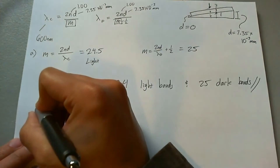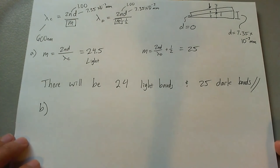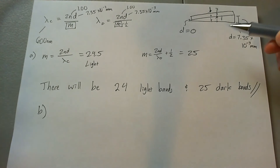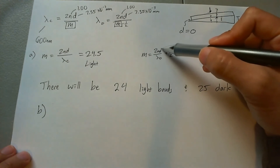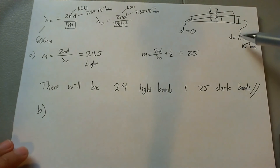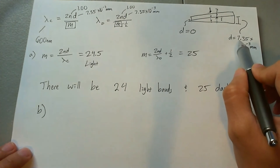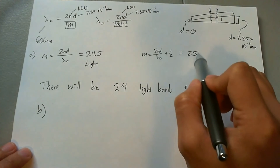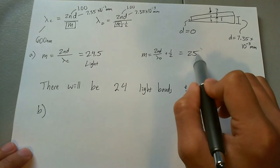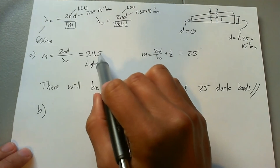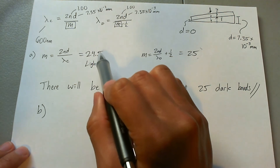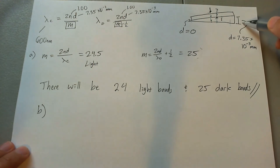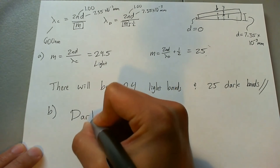Part B is conceptual: will the area next to the wire be bright or dark? We see that m is a whole number for a destructive wavelength at the position of the wire. Right at d = 7.35 times 10 to the negative 3 millimeters, we have a whole number for the mode, which means it will be a dark fringe. Since we have a half-number for the mode of a light fringe, it won't be light — it's between one light fringe and another. So the answer to Part B is dark.